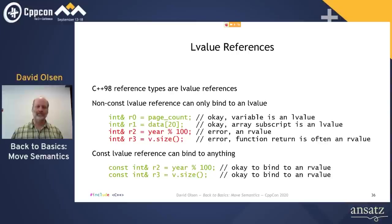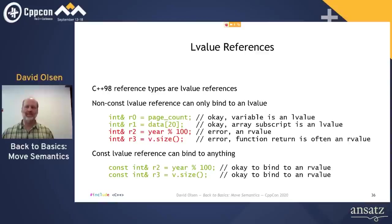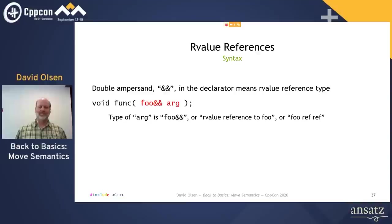L-value references are the ones that have been in C++ from the beginning. A non-const L-value reference can only bind to an L-value. A const L-value reference, as shown on the bottom, can bind to anything. With all that background out of the way, we can finally start talking about R-value references.